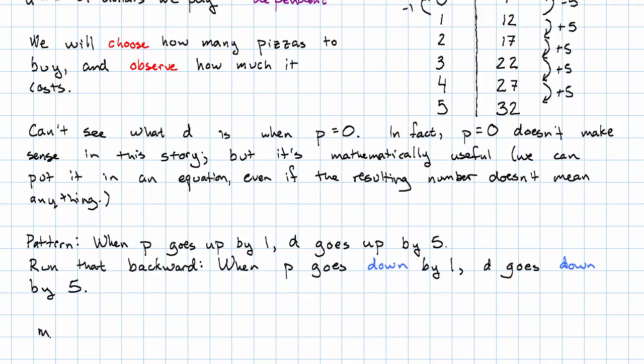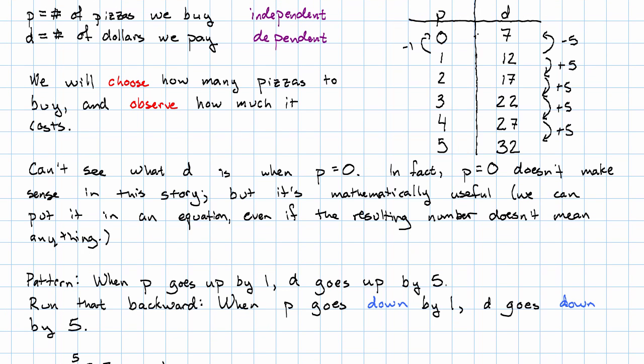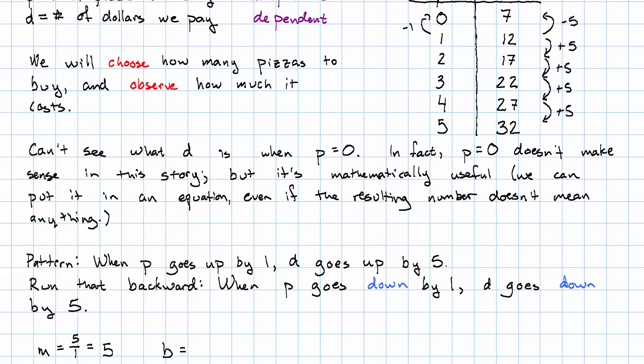So m, that's the change in d over the change in p, so that's just five. B is the value of d when p is zero, so that'll be seven. And we get the cost is five times the number of pizzas plus seven.